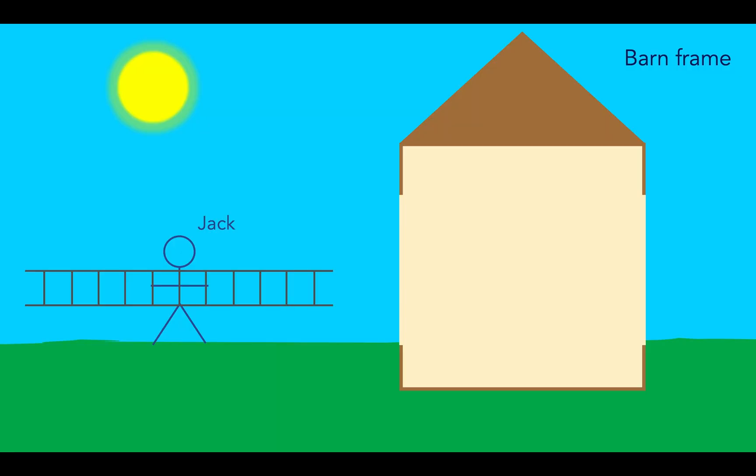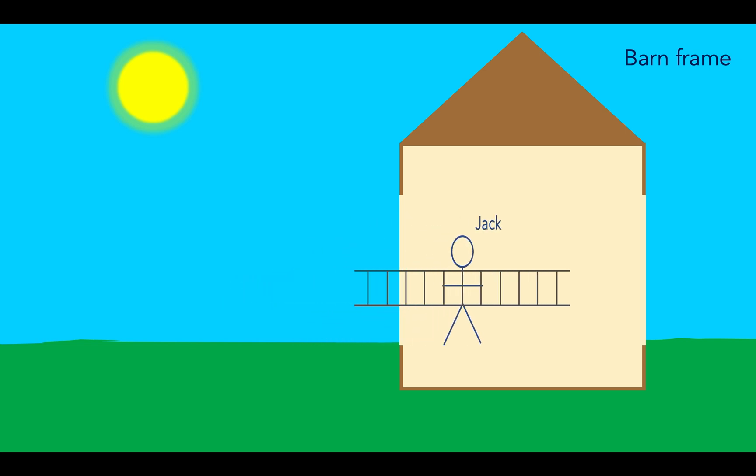So here, even though the doors close at the same time in the barn's frame, they will close at different times in Jack's frame in such a way that the ladder also remains unaffected in Jack's frame.